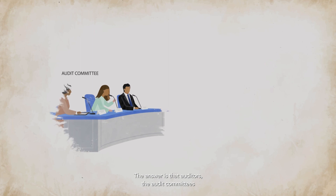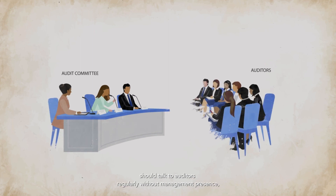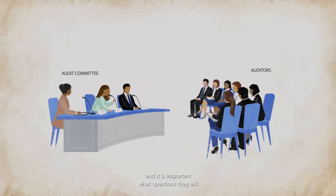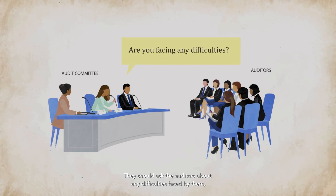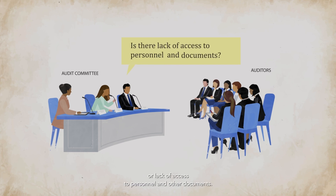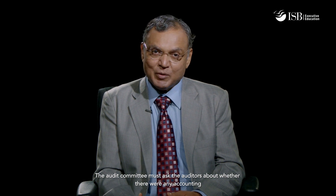So the question is, how do audit committees do that? What are the best practices in assessing the auditor's independence? The answer is that audit committees should talk to auditors regularly without management presence. And it is important what questions they ask during this separate meeting. They should ask the auditors about any difficulties faced by them, any restrictions on the scope or lack of access to personnel and other documents. The WorldCom board did not do that, and that was a big factor for why there was that big WorldCom scandal in 2002. The audit committee must also ask the auditors about whether there were any accounting adjustments that they proposed but the company did not make.